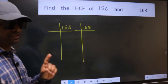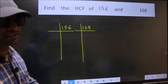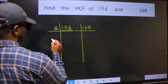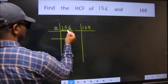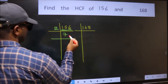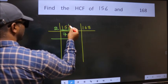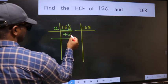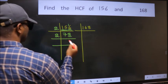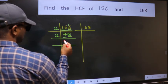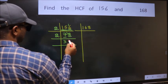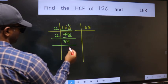Step one: for 156, the last digit is 6, which is even, so take 2. 156 divided by 2 gives 78. For 78, the last digit is 8, which is even, so take 2. 78 divided by 2 gives 39. For 39, the last digit is 9, which is not even, so this number is not divisible by 2.